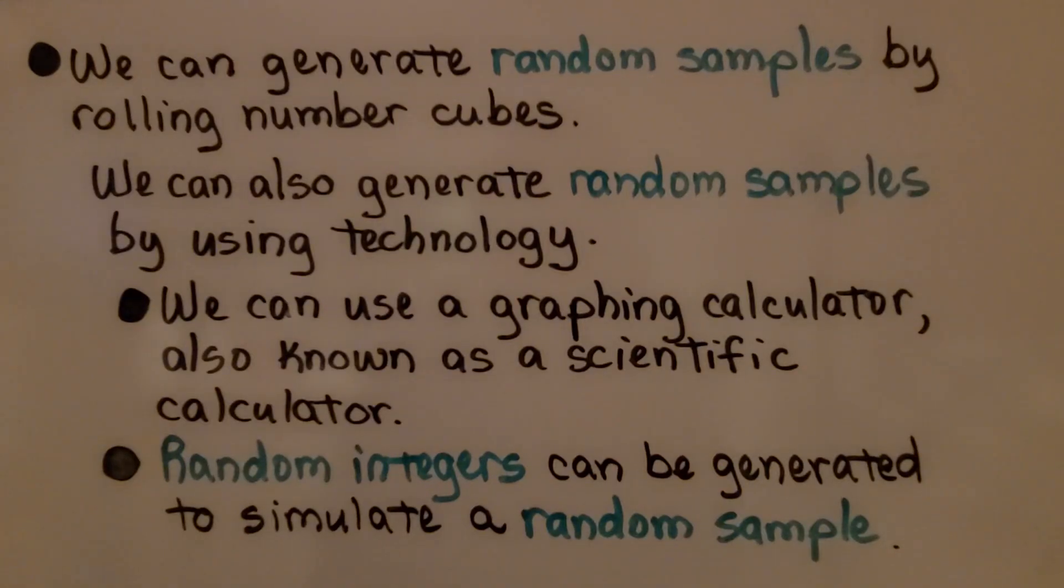We can generate random samples by rolling number cubes, or dice. We can also generate random samples by using technology. We can use a graphing calculator, also known as a scientific calculator. Random integers can be generated to simulate a random sample.